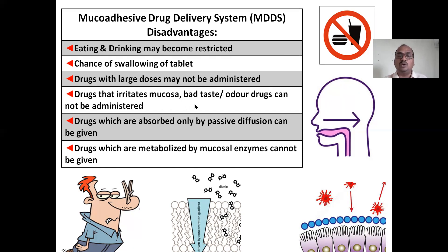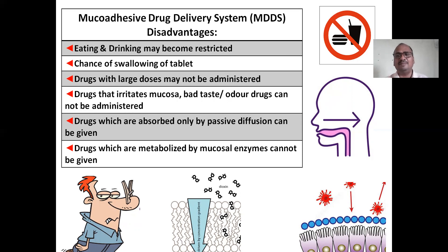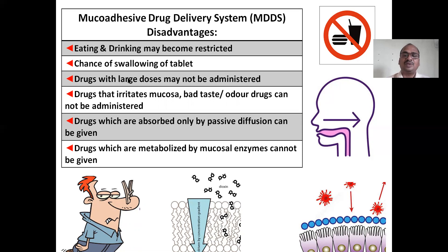Drugs that irritate the mucosa, drugs with bad taste or bad odor, cannot be administered via buccal or mucosal routes. Only drugs that are absorbed by passive diffusion are preferred — the drug must be transported via passive membrane diffusion; other mechanisms are less effective. Drugs that are metabolized by mucosal enzymes cannot be given via this route, as mucosal enzymes would break them down. Eating and drinking is also restricted, and swallowing of the buccal tablet is a risk.